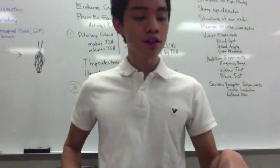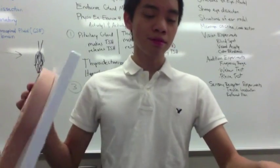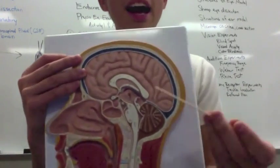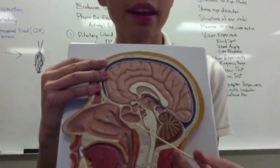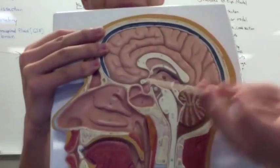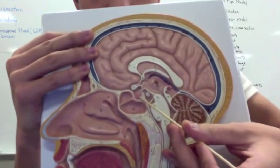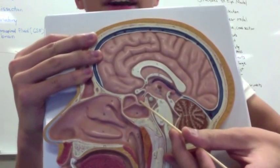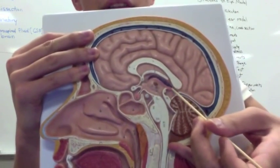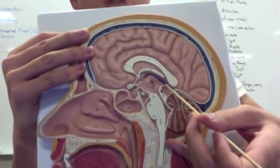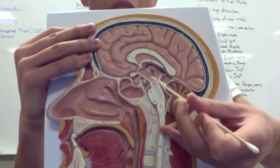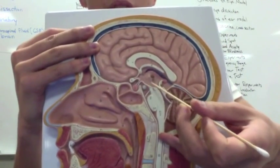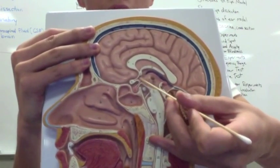Of course, we have the pituitary gland. This is your pituitary gland right here. You have your pineal gland — this is your pineal gland. Your hypothalamus is this section right here.